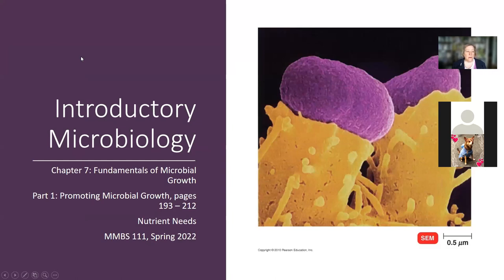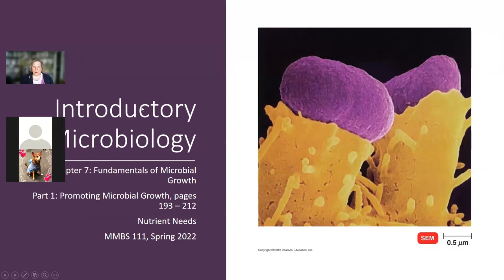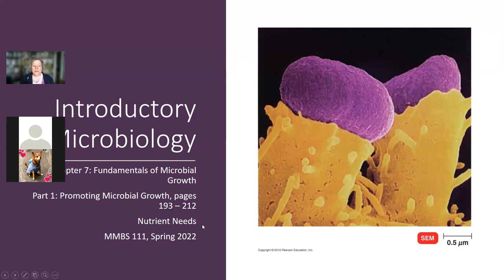Today we are going to continue our discussion of the first part of chapter seven, which talks about how we get microbes to grow. Specifically, we're going to talk about nutrient needs - things that they eat.